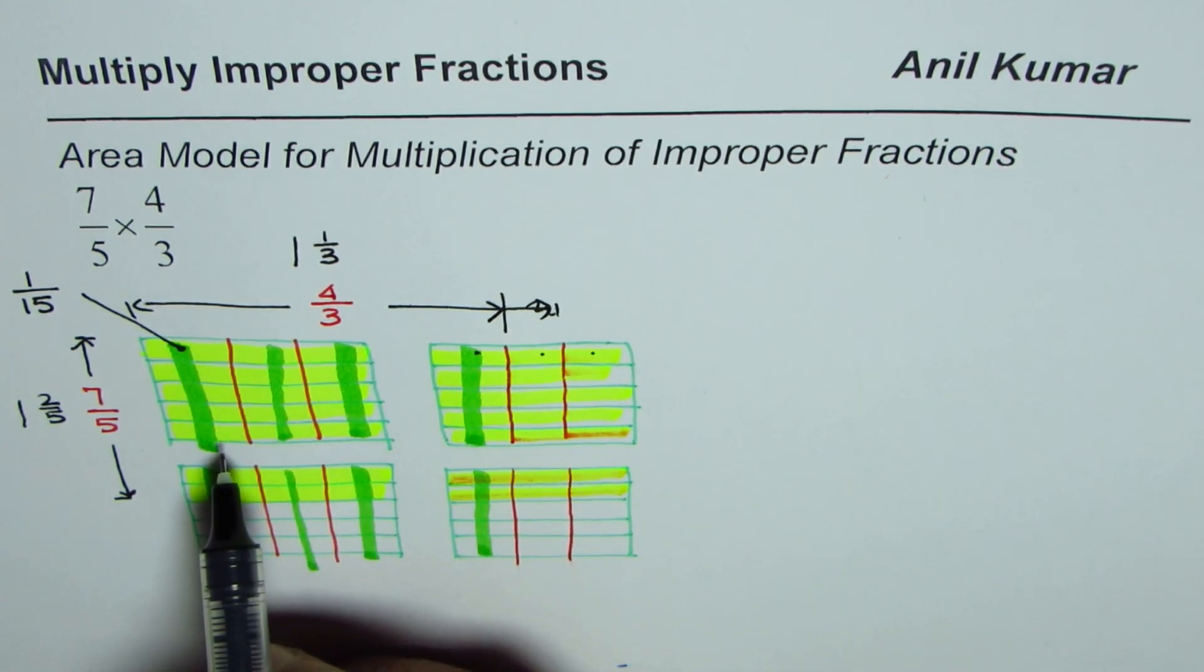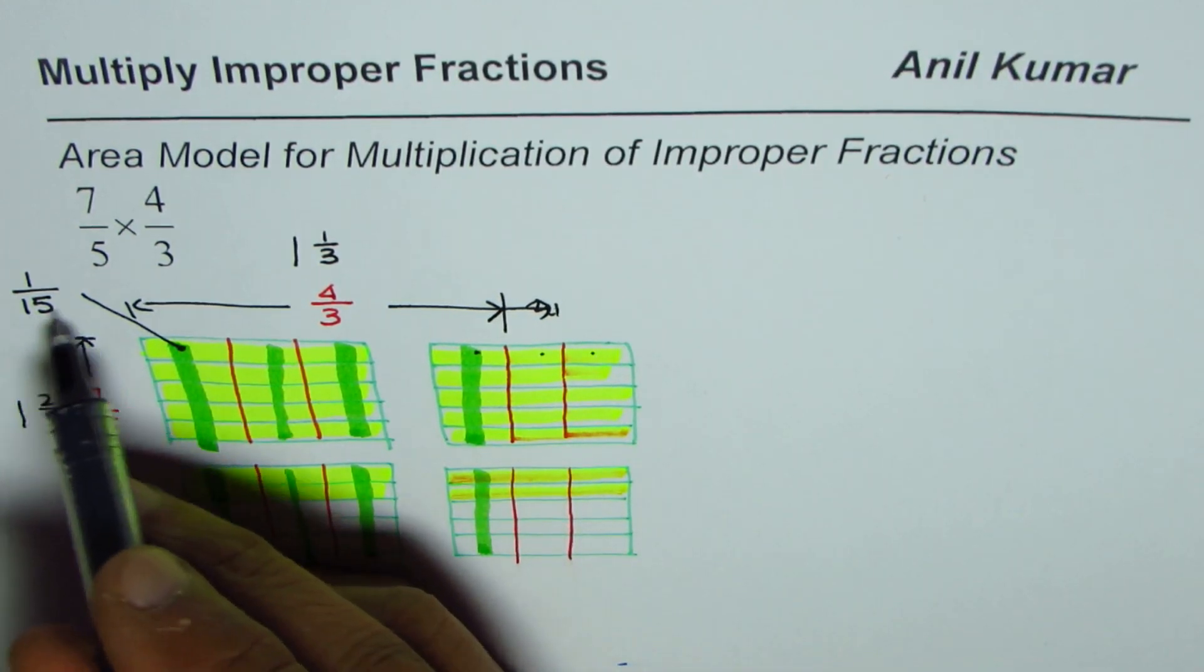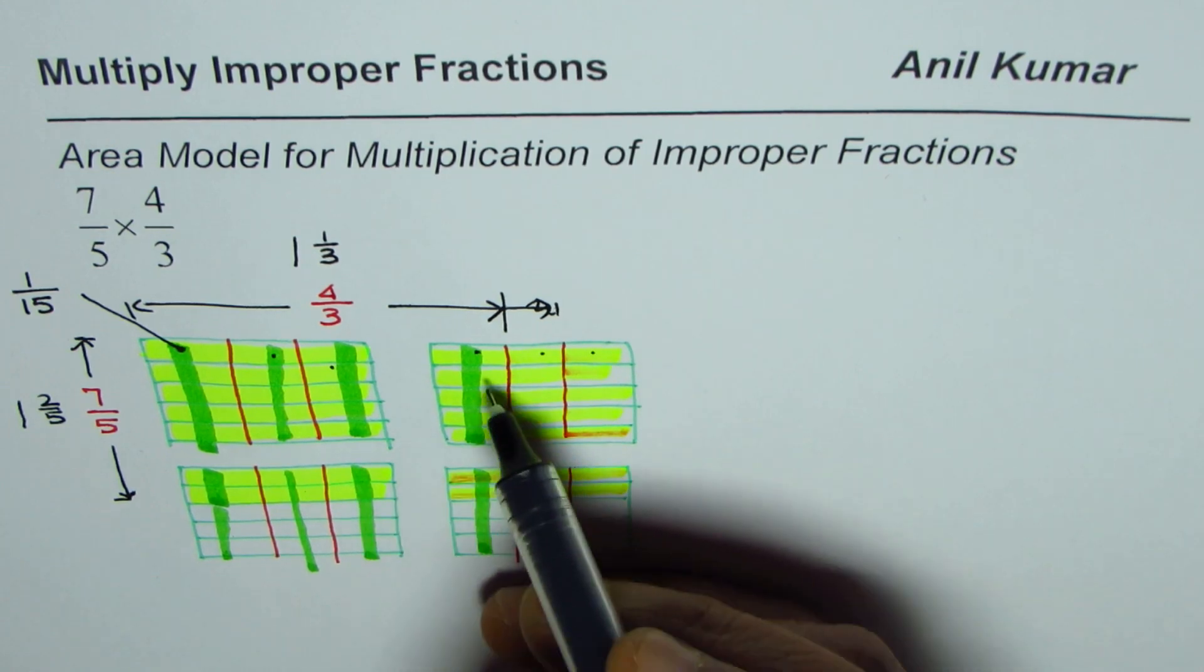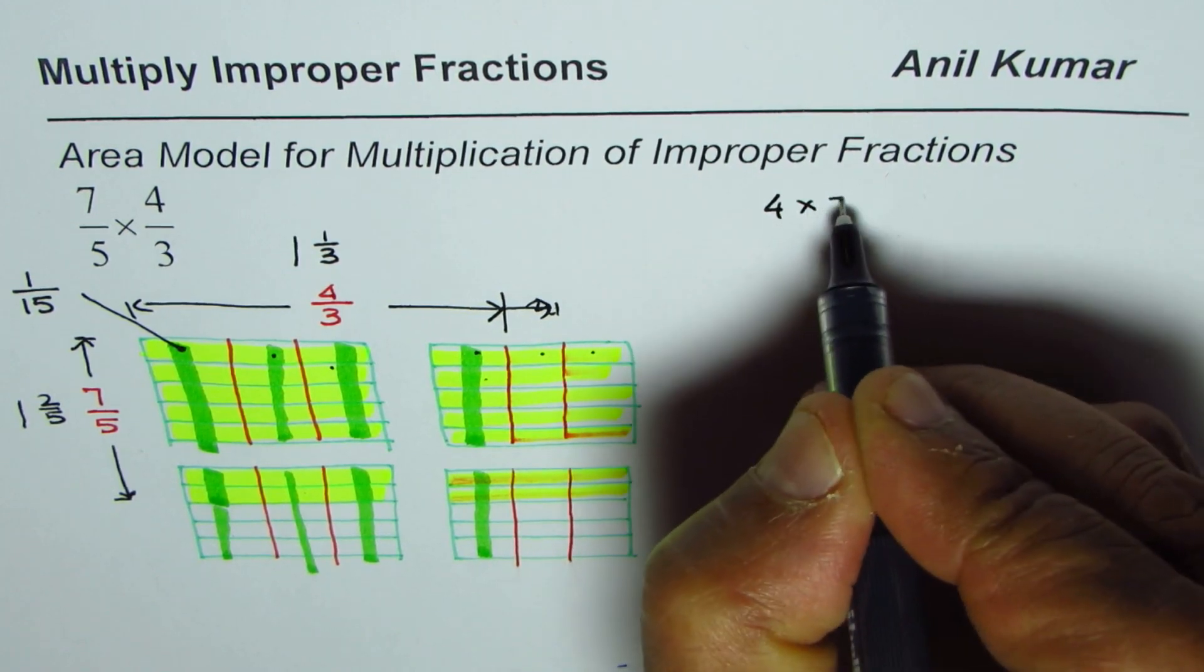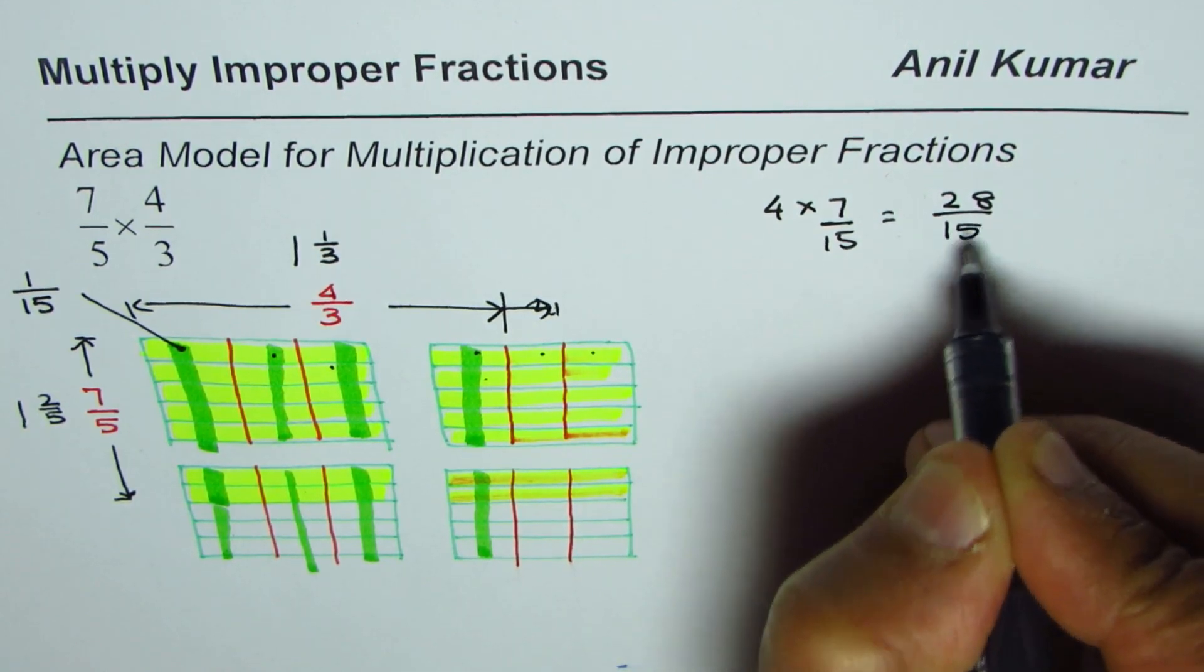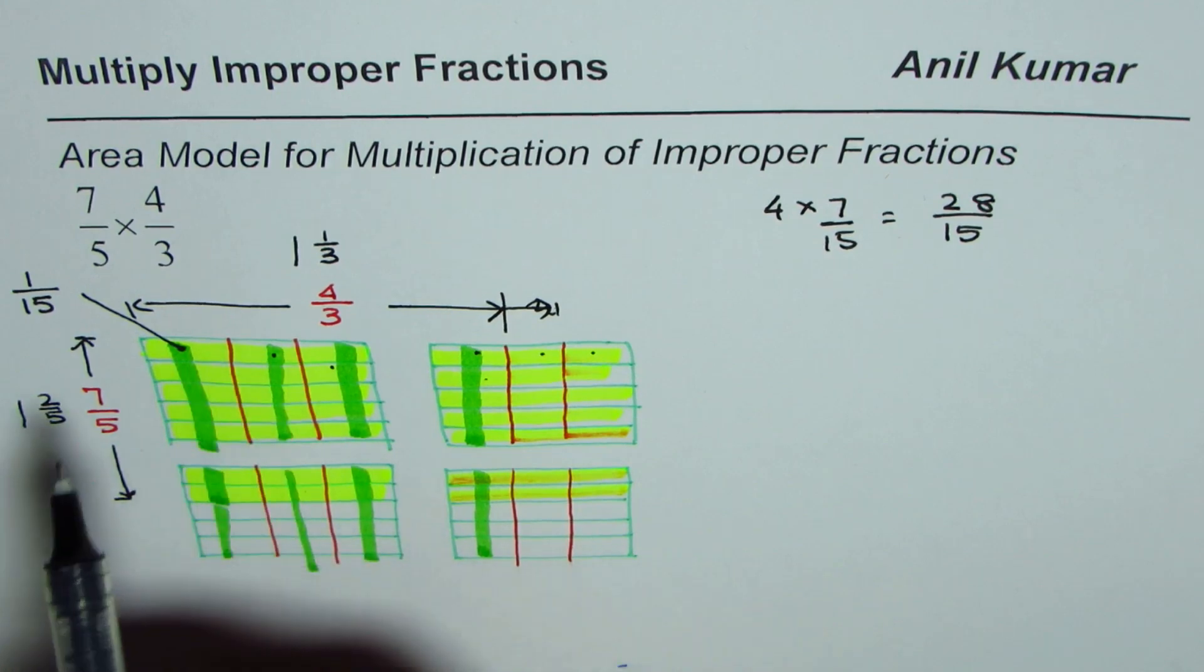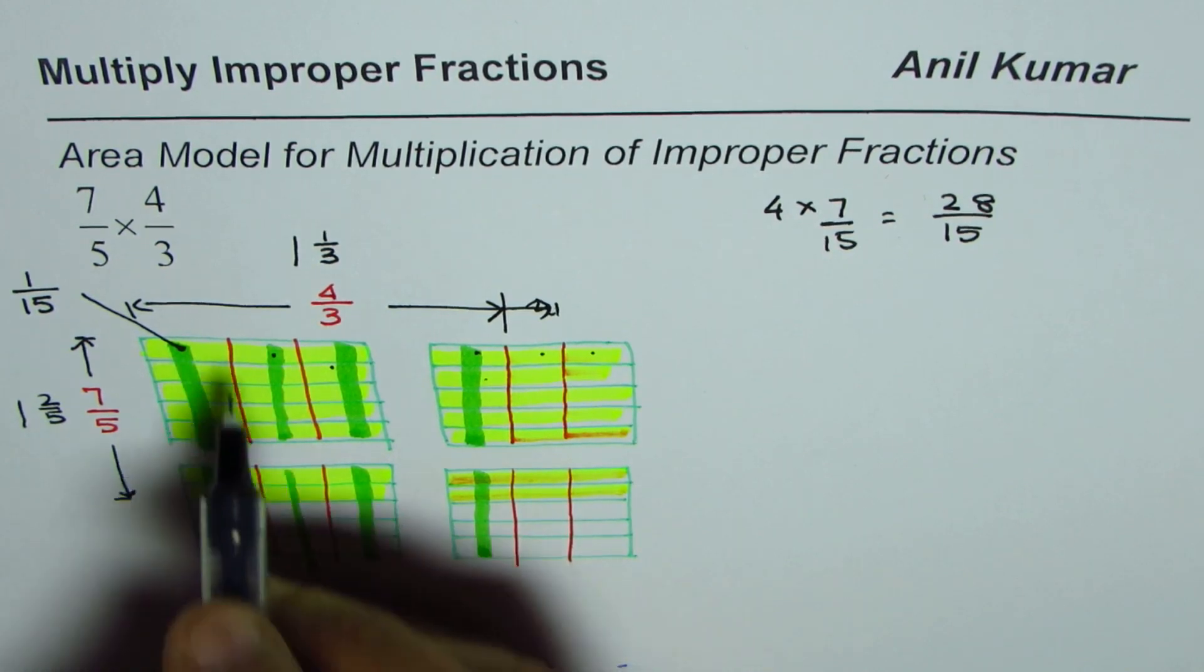How many such divisions do we have? We could count by 7s. So each row has 7 out of 15. So 7 out of 15, 2 times 7 out of 15, 3 times 7 out of 15, and 4 times 7 out of 15. So we could write this as 4 times 7 out of 15. And that is 28 over 15. So that is one way we could get this product. The other way is you can count how many have been shaded by 7 out of 5 times 4 over 3.